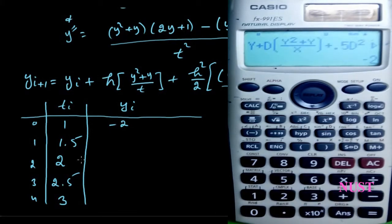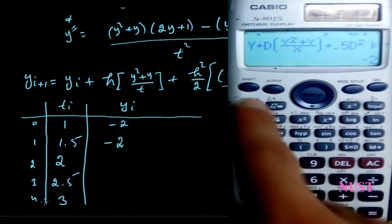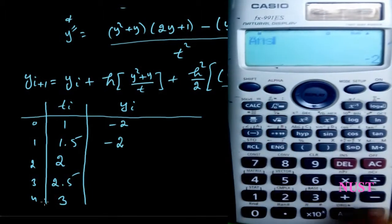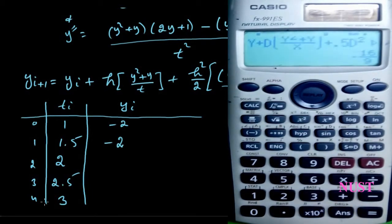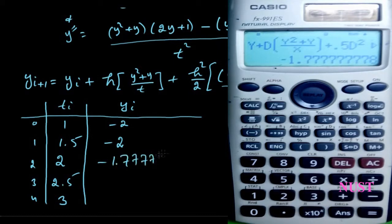The function value at t equals 1.5 is minus 2. Repeat this for the rest of the points to get the solutions. I hope it was helpful, and if you like, please subscribe. Thanks for watching.